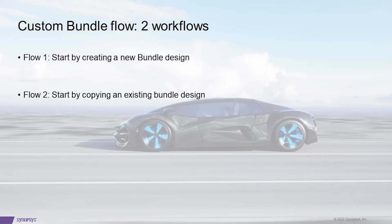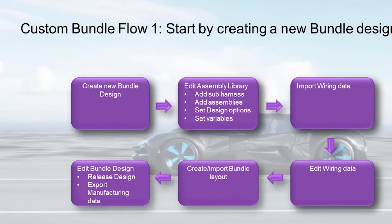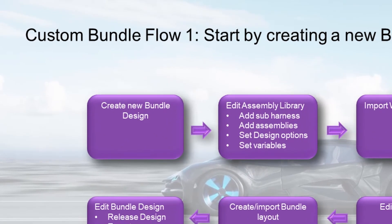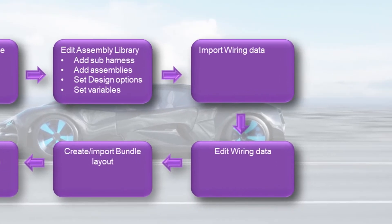With Custom Bundle Flow, there are two workflows available. One: start by creating a new bundle design. Two: start by copying an existing bundle design. In Custom Bundle Flow 1, we create a new bundle design, then add the required data in the assembly library like the harness, sub-harness, assembly, design option, and variable, and then we import the wiring data by selecting one of the wiring designs available.